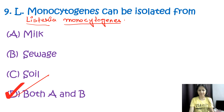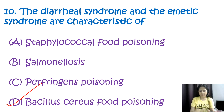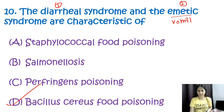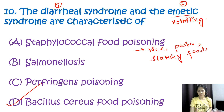Question number ten: the diarrheal syndrome and the emetic syndrome are characteristics of — options are staphylococcal food poisoning, salmonellosis, Clostridium perfringens food poisoning, or Bacillus cereus food poisoning. The correct option is D, Bacillus cereus food poisoning. Bacillus cereus is a bacteria that produces two types of syndromes: the diarrheal syndrome and the emetic (vomiting) syndrome. This bacterium can be found in rice, pastas, or other starchy foods that have been cooked and left at room temperature.